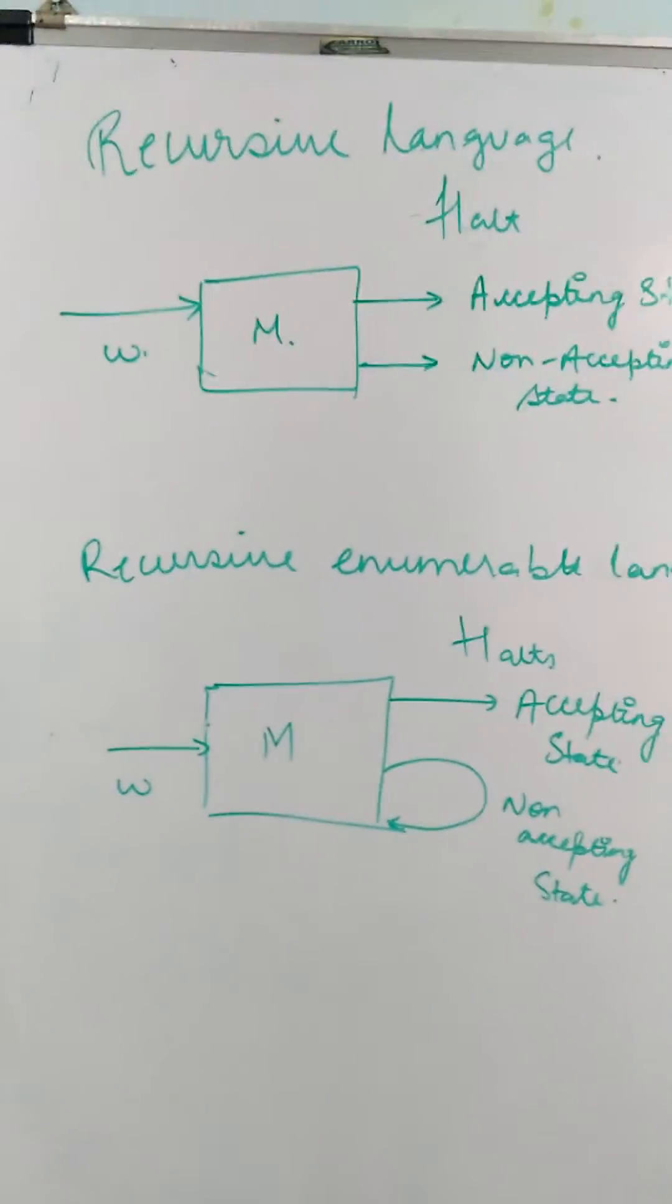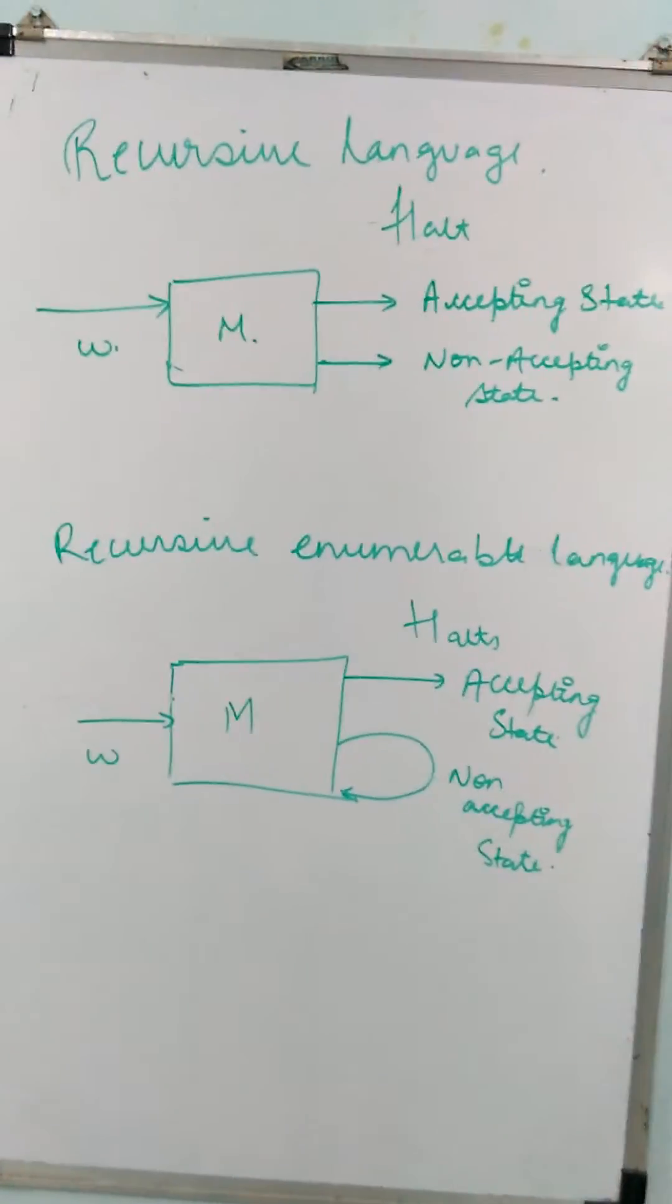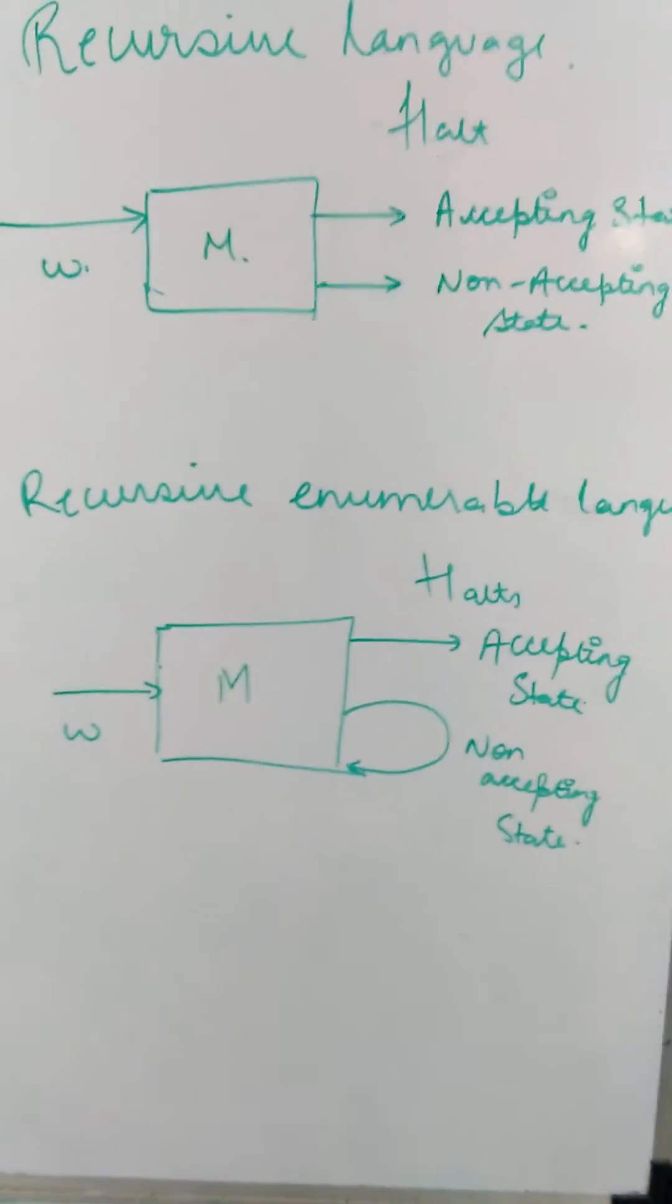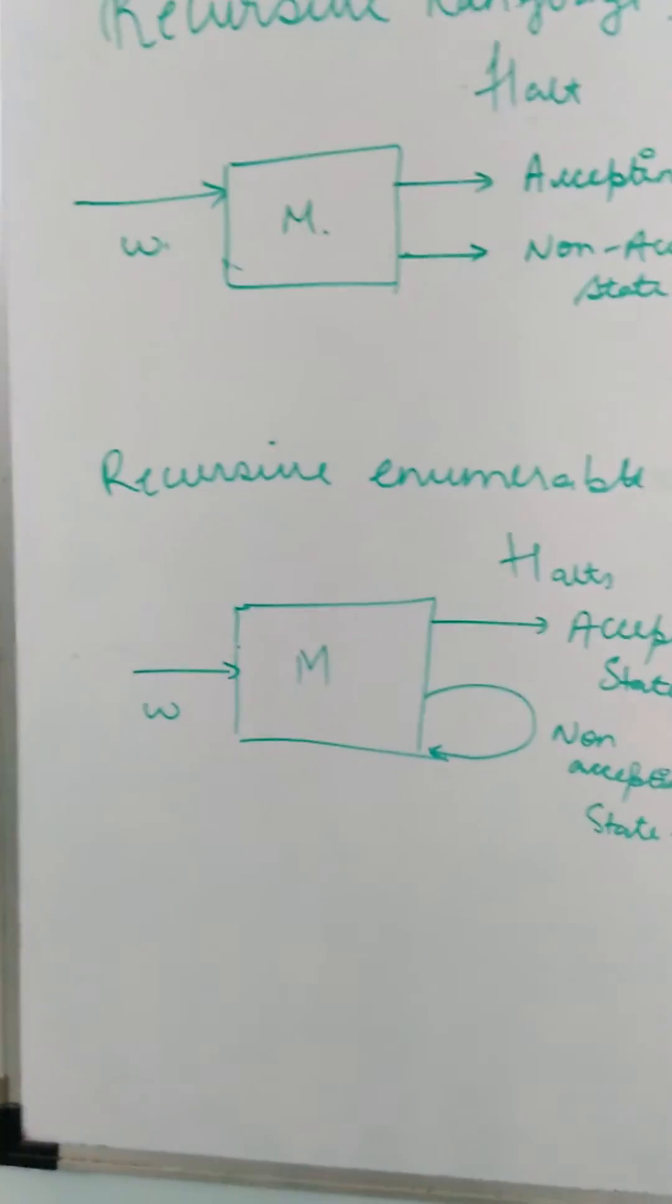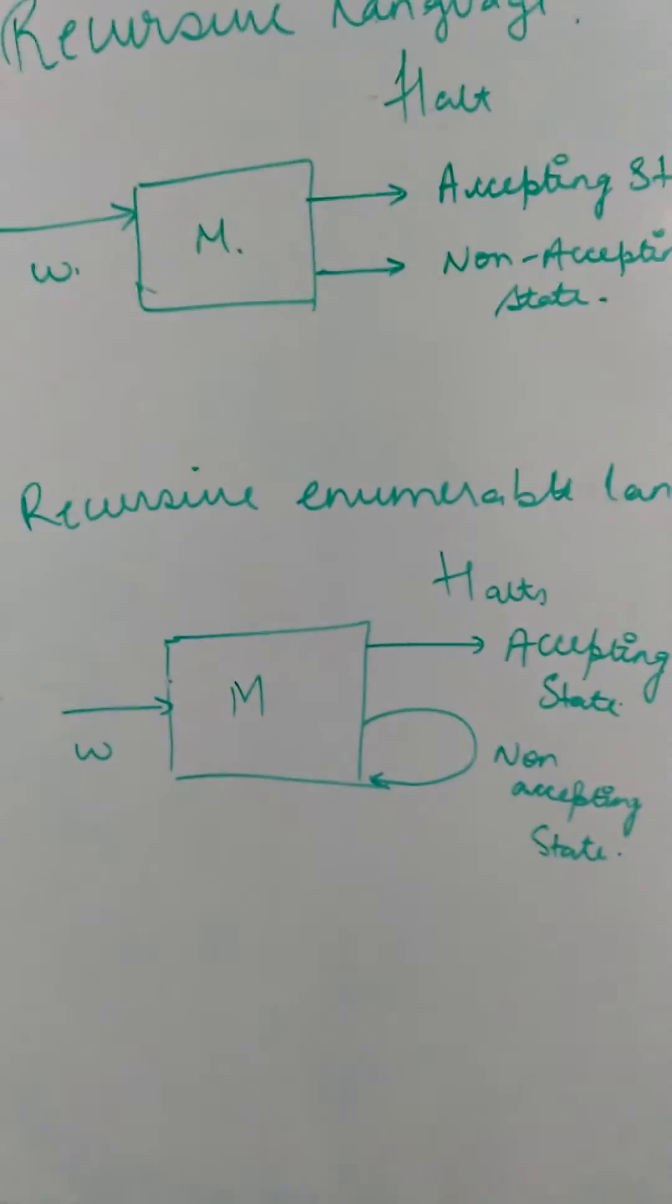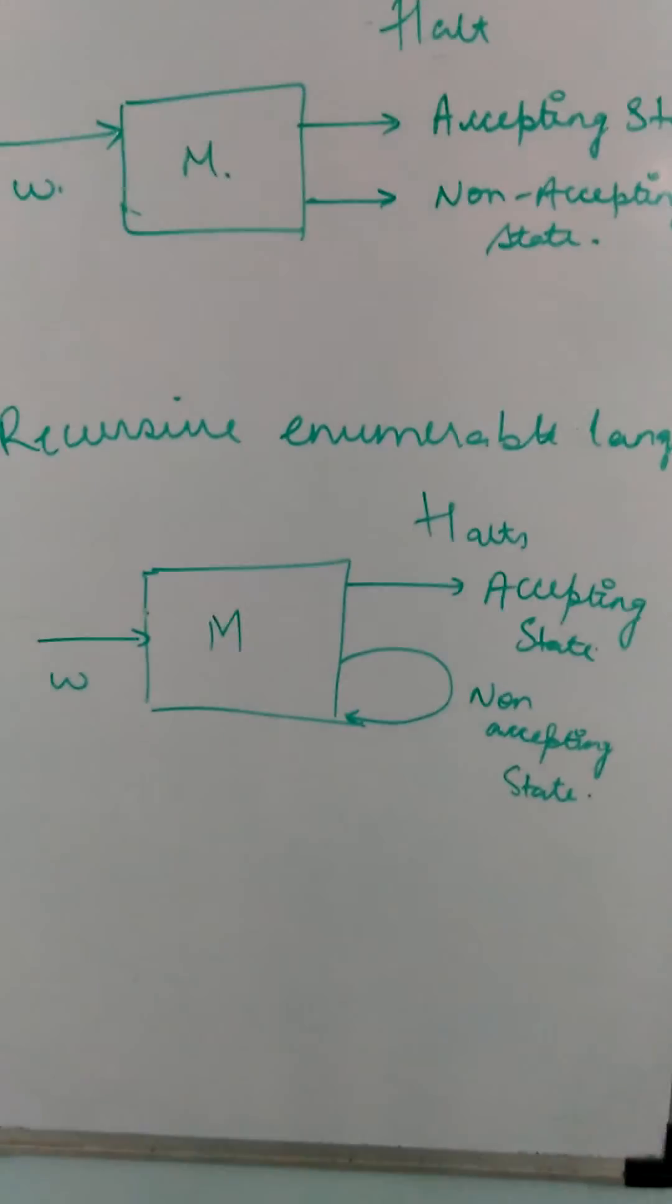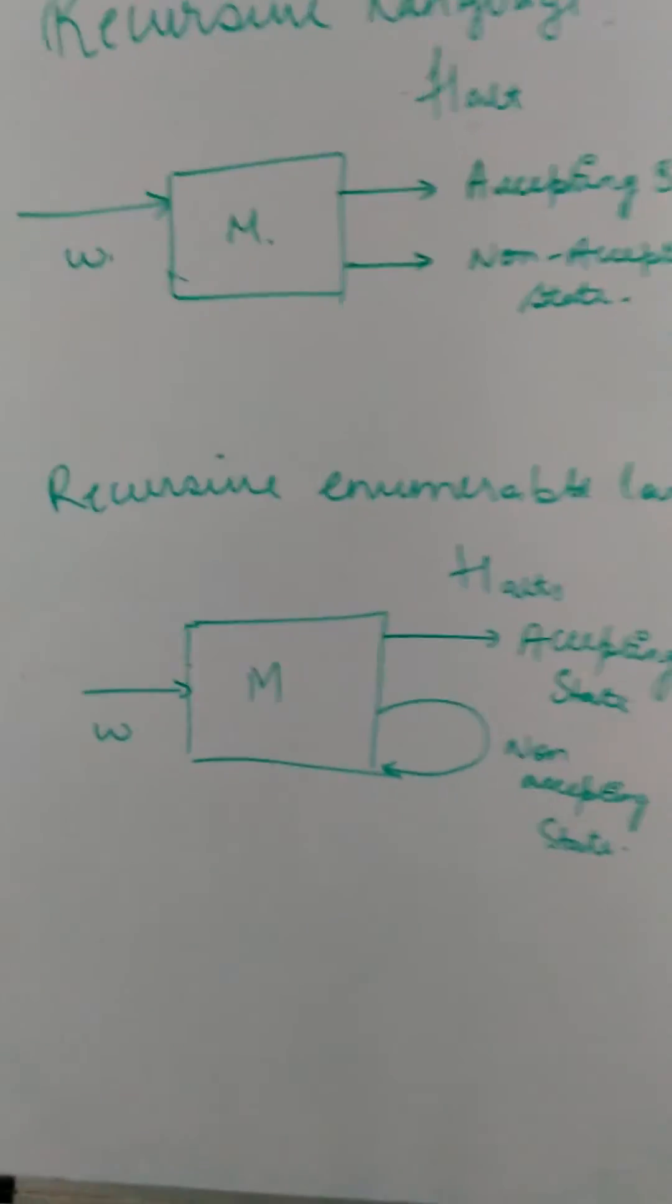Similarly, if a language is semi-decidable, if it is semi-decided by a Turing machine, then it is called a recursive enumerable language. In those languages it will halt only at the accepting state, else it will loop forever.